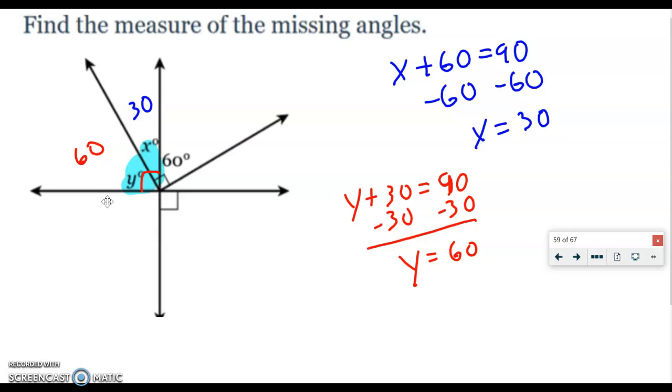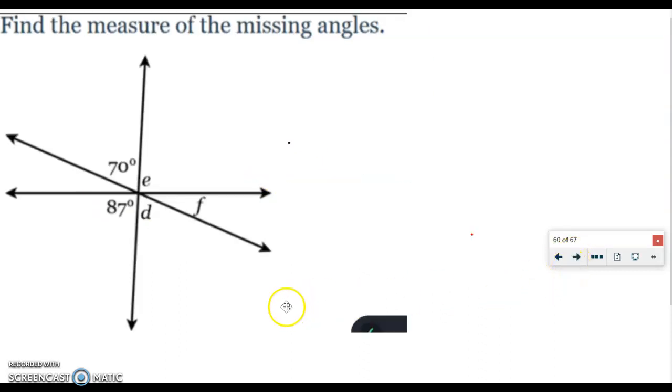All right, let's take a look at another example. Here, find the measure of the missing angles. We've got three angles we're looking for: E, D, and F. Okay, so it seems like it's hard, but it's not. It's really easy because most of these are vertical right here.